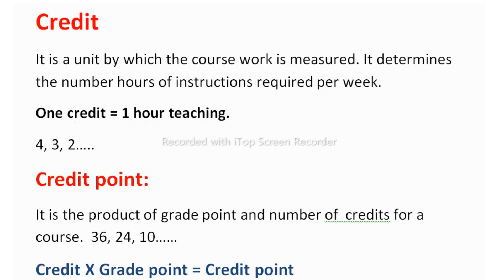Credit is basically a parameter to measure the weightage of any subject. Generally when you study in any class, there are core courses, selective courses, and optional courses. In the credit system, points are assigned for each course, for each subject regarding credit.